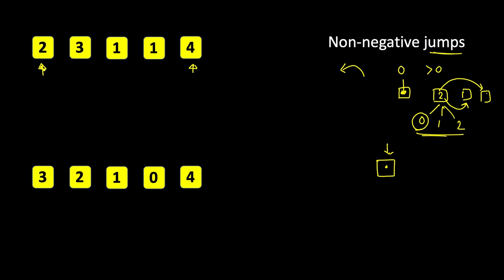From 2 we can jump two steps, so we can land on either of the next two positions. Which one we actually take depends on what happens further — maybe from one position there is a direct jump to the end, but from another it's zero and we'd be stuck. It's not the case that we always take the longer jump. From a step with value 3, we can jump one, two, or three steps, so in fact we can reach the last step. There will be multiple valid paths, but you just have to return true or false — whether reaching the last step is possible.